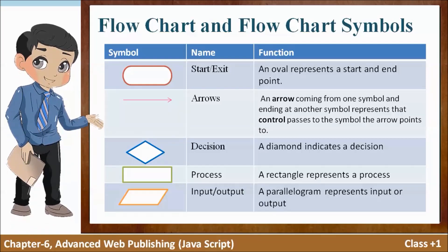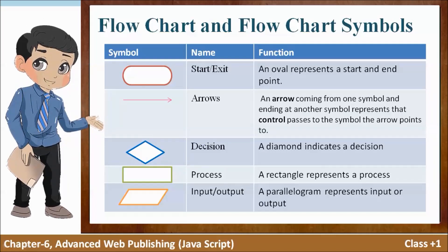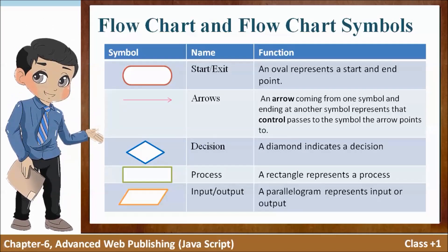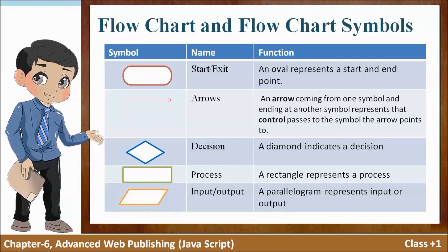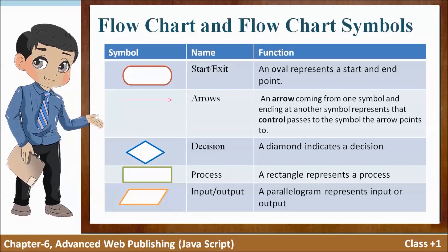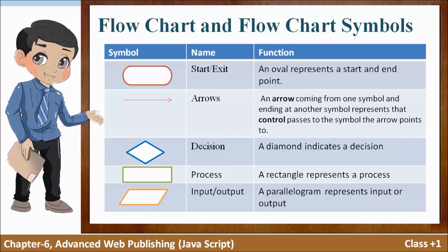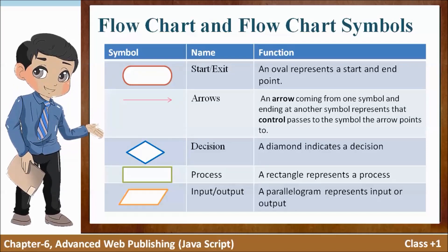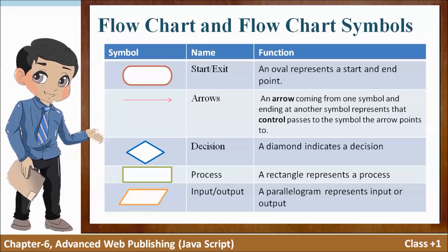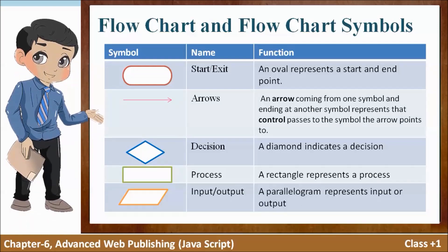Sabse pehle jis symbol ke baare mein hum padhenge woh hai oval, jo start aur end point ko represent karta hai. Next is arrow — yeh hamara jo data kis direction mein flow kar raha hai woh hamein batata hai, aur control ek symbol se doosre symbol mein ja raha hai usko represent karta hai.